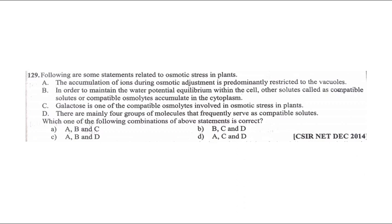Next: statements related to osmotic stress in plants. The accumulation of ions during osmotic adjustment is predominantly restricted to vacuoles - yes, to maintain water potential equilibrium within the cell. Other solutes are called compatible solutes or compatible osmolites accumulated in the cytoplasm. Prolines, sorbitol, mannitol, glycine betaine - these accumulate as osmolites. This is correct.